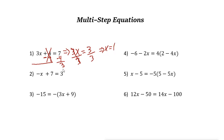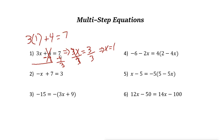Now the last step — let's check the answer. Plug in the value 1 into the original equation and see if it works. So 3x: x is 1. 3 times 1 plus 4 — so 3 times 1 is 3, plus 4 is 7. Yes, the answer is correct. 7 is here, so the answer is correct.